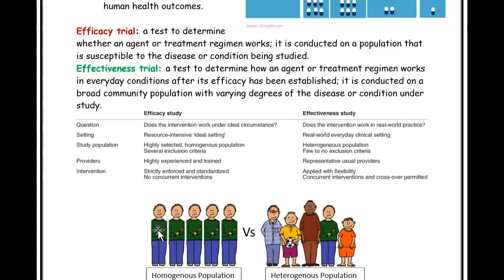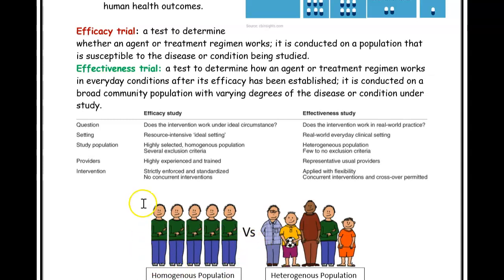Let's say all these people have COVID. Would a drug for something completely different — let's say a blood pressure drug — help all these people who have COVID? If I did this study on people who are homogenous — who are all the same, they all have COVID, they're all the same age, they're all males, for example — then that's an efficacy trial. The blood pressure pill was given to a homogenous population: all males, all in their 30s, and all with COVID.